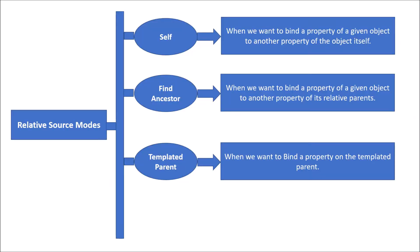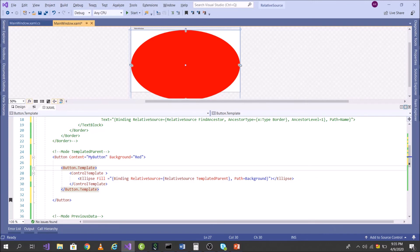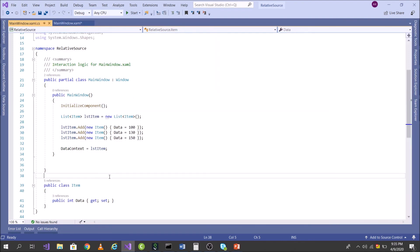Now let's go to the last mode: PreviousData. This is a less-used mode and is used in a scenario where I want to bind the previous data item from an item collection.